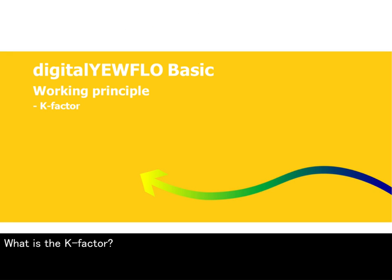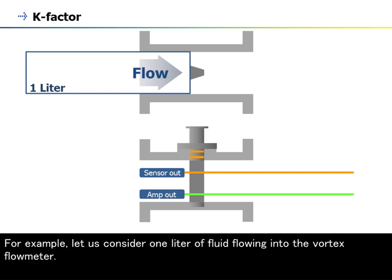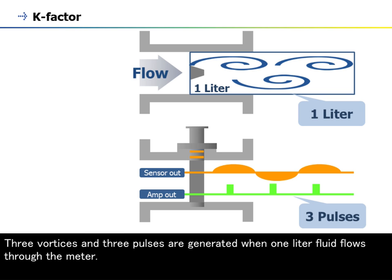What is the K-factor? The K-factor of the vortex flow meter is the number of pulses generated per unit volume. For example, let us consider one liter of fluid flowing into the vortex flow meter. Three vortices and three pulses are generated when one liter fluid flows through the meter.